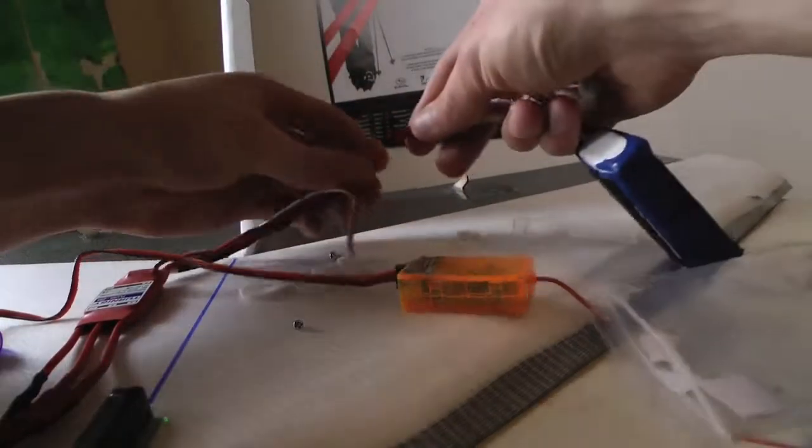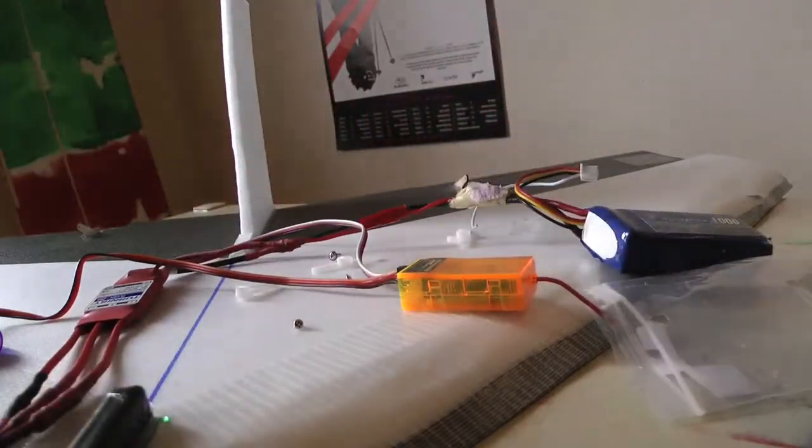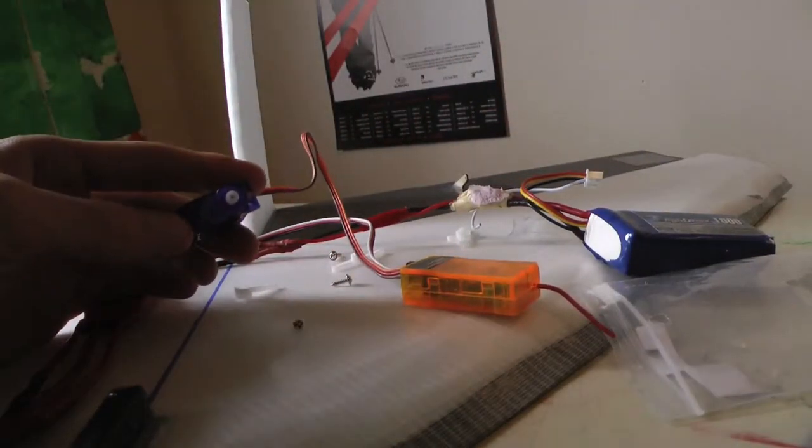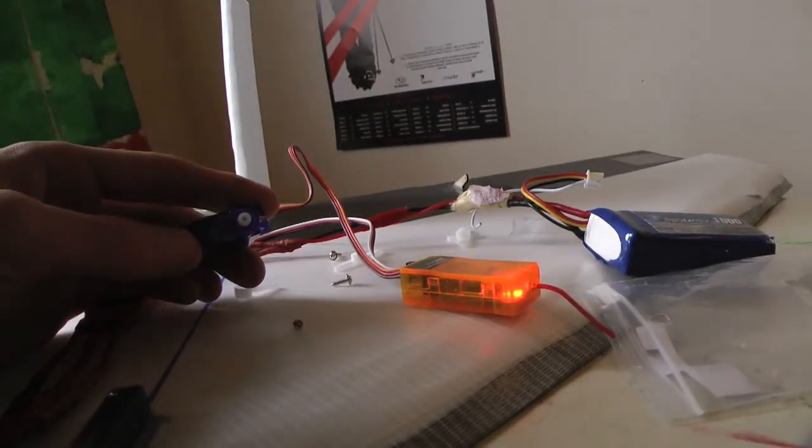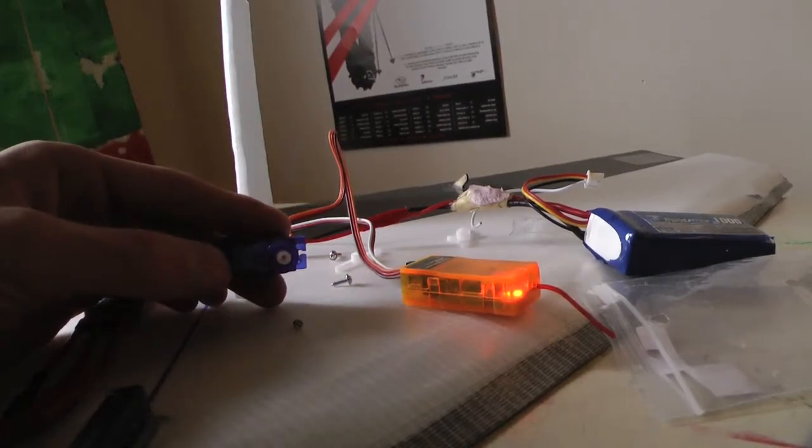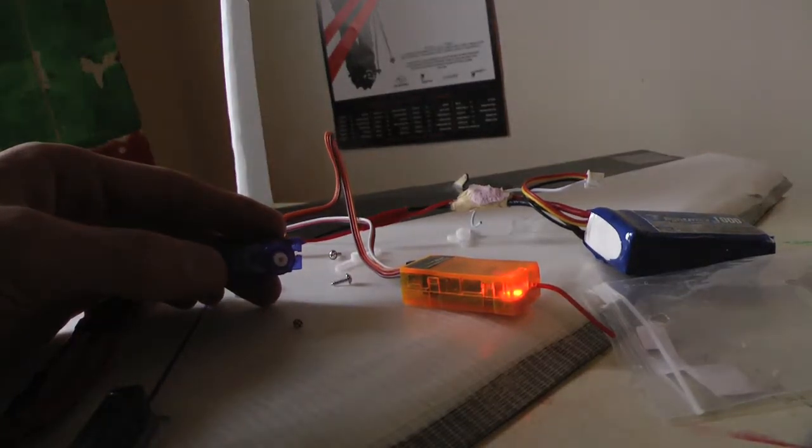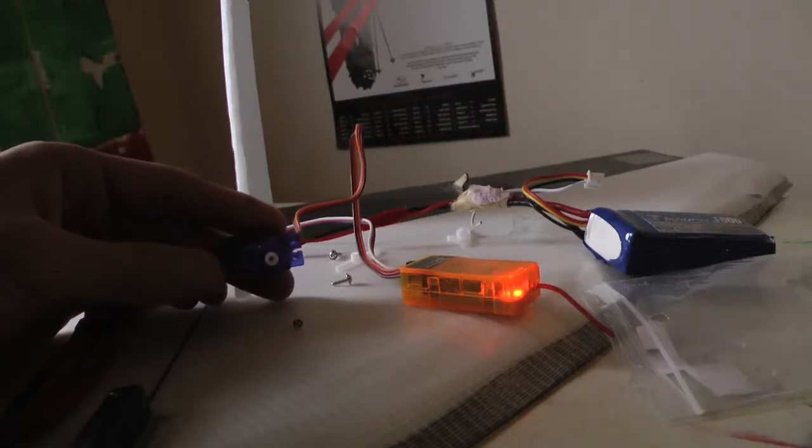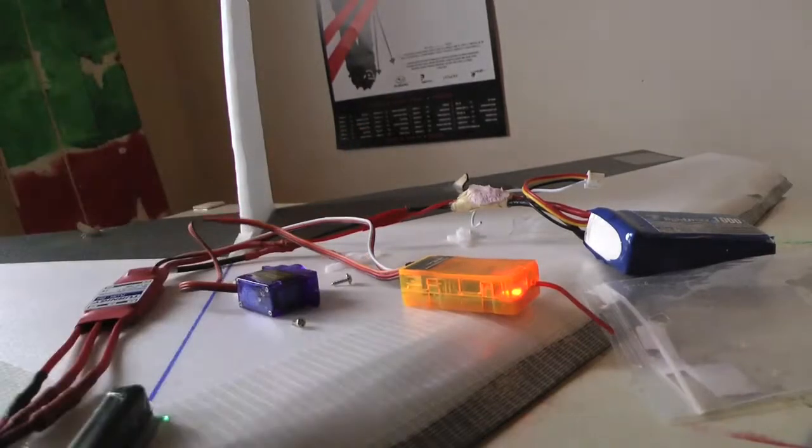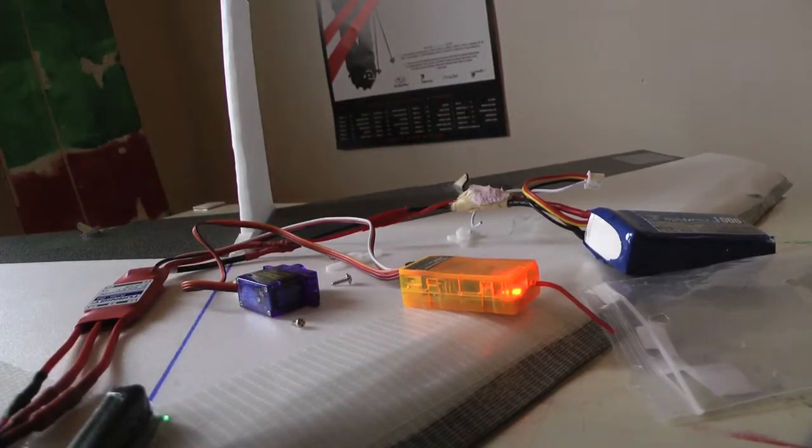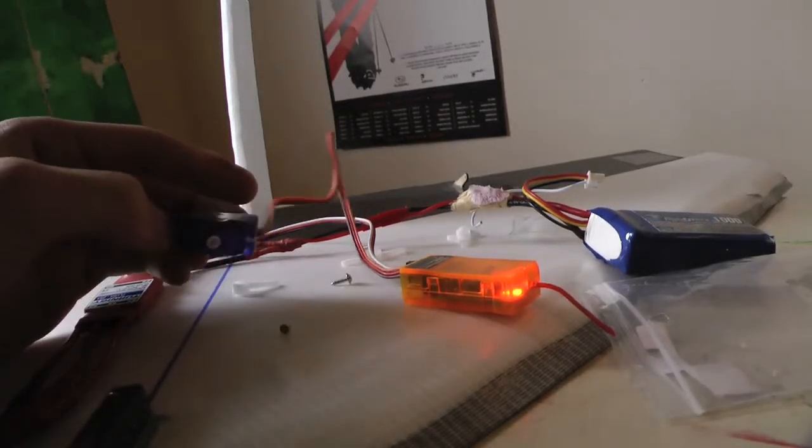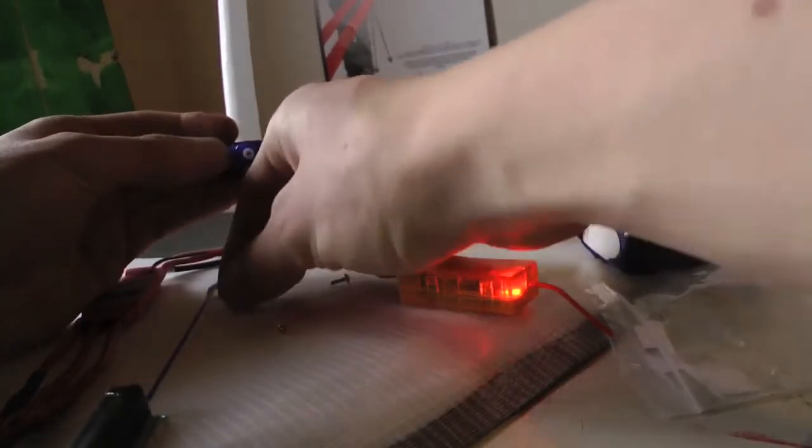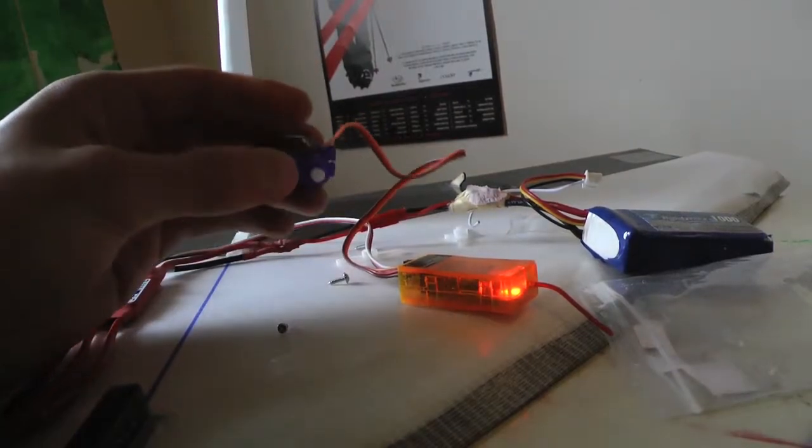And then you're going to want to turn on all this stuff. So as you can see here, my stick now is moving my servo. So now what you're going to do is go and make sure all your trims are at zero. And you're going to want to make sure the servo is centered.